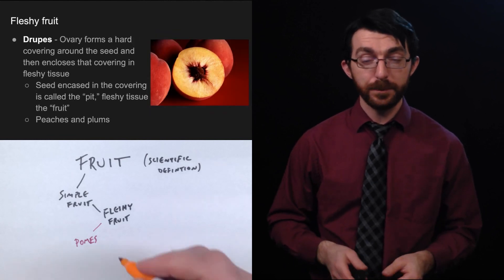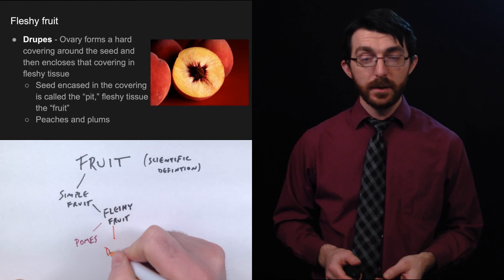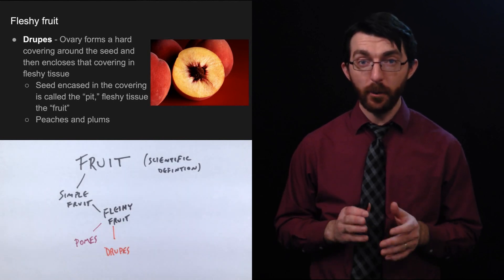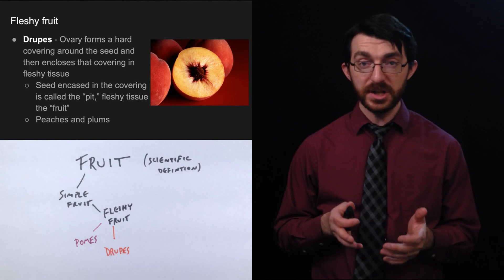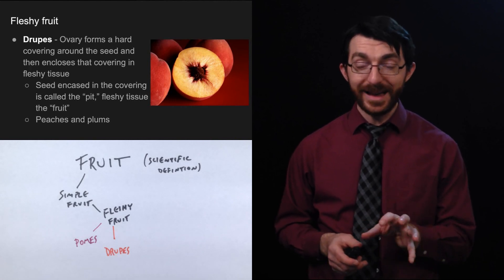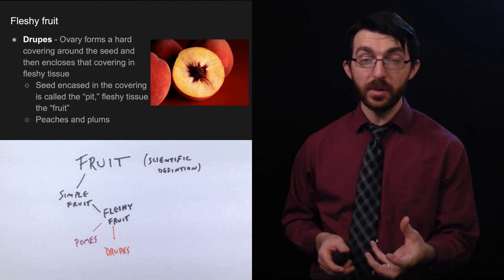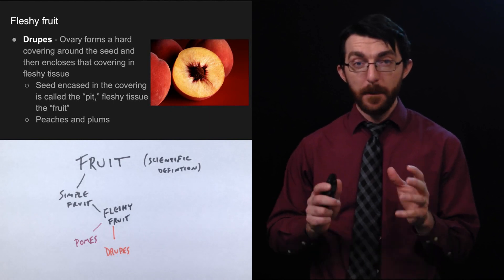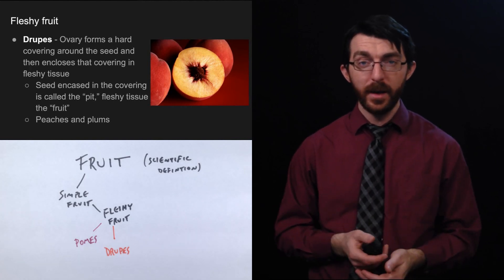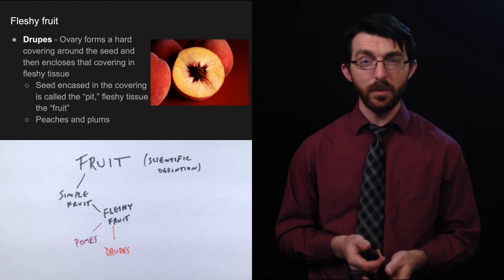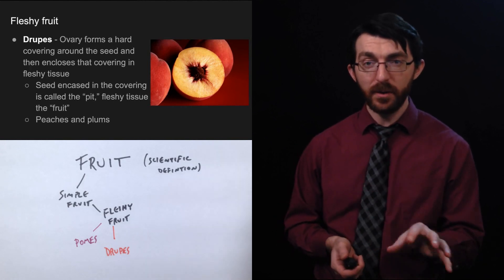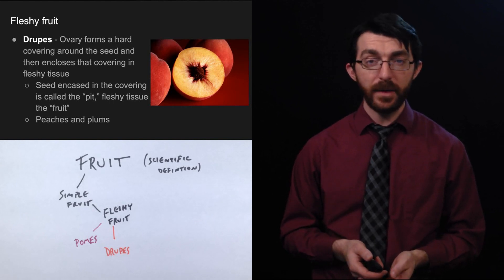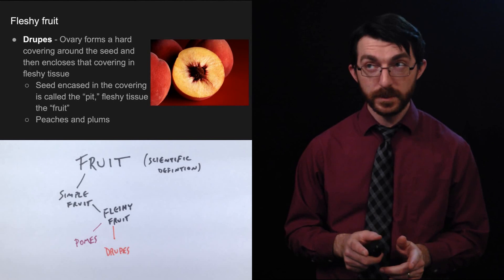So simple fruit, fleshy fruit, pomes. Let's see another kind of fleshy fruit. They're called drupes. That is one of my favorite words to say. I just think it's so fun. Drupe. In a drupe, the ovary forms a hard covering around the seed and then encloses that covering in fleshy tissue. So in this particular case, the seed that's encased in the covering is called the pit and the fleshy tissue is the fruit, right? The ovary is going to put an extra hard covering on that seed. That's why the seed of a peach is just so impossible and huge extra hard covering on there. And then it's surrounded by a fleshy fruit around that. Peaches are of course a good example of that as are plums.